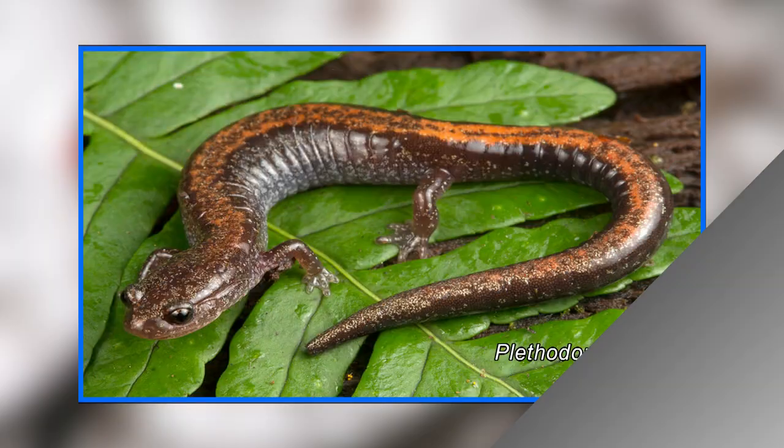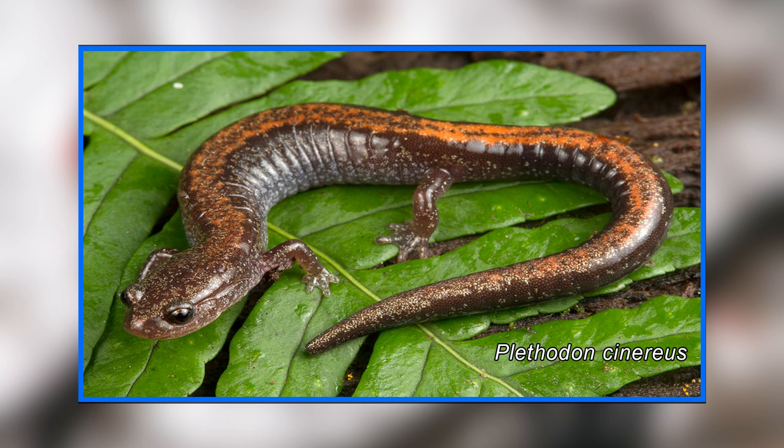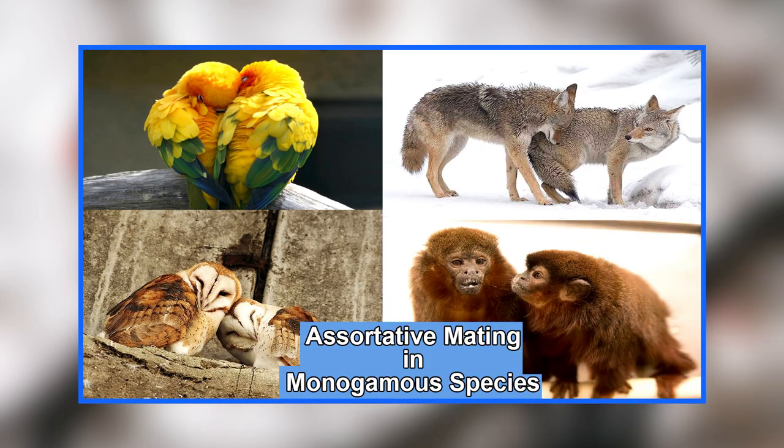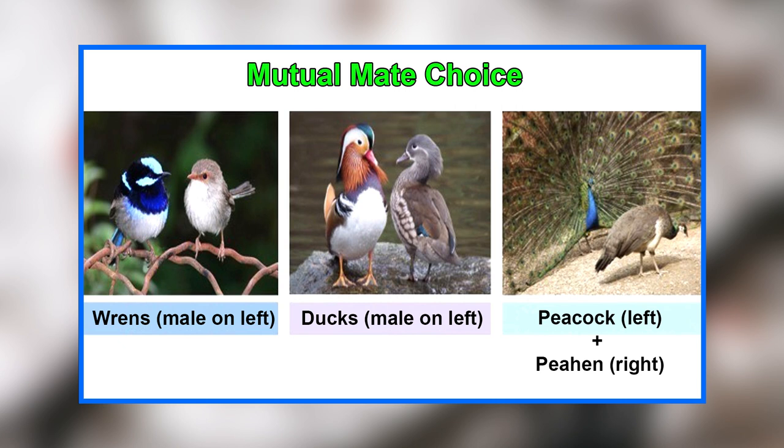Assortative mating with respect to two common color morphs — striped and unstriped — also exists in a polymorphic population of eastern red-backed salamanders, Plethodon cinereus. Assortative mating is also found in many socially monogamous species of birds. Monogamous species are often involved in bi-parental care of their offspring. Since males are equally invested in offspring as the mother, both genders are expected to display mate choice — a phenomenon termed mutual mate choice. Mutual mate choice occurs when both males and females search for a mate that will maximize their fitness. In birds, female and male ornamentation can indicate better overall condition, better genes, or better suitability as parents.